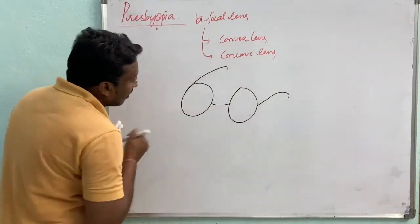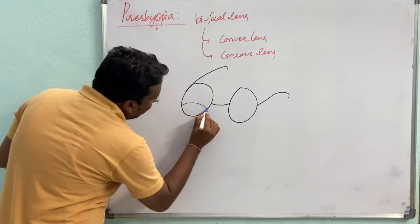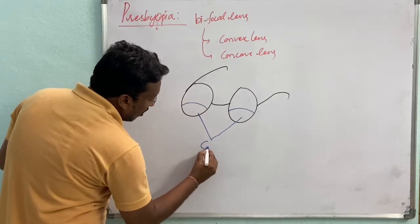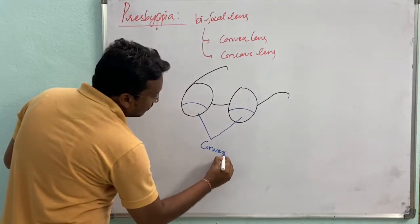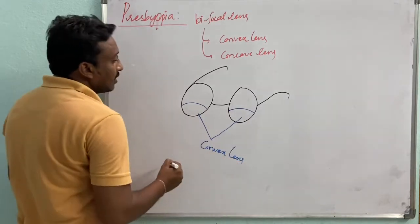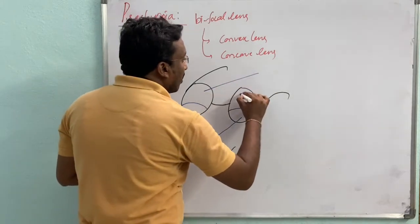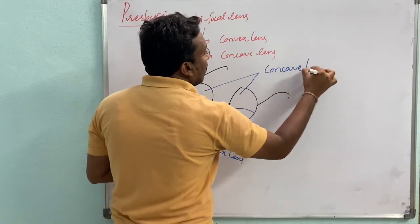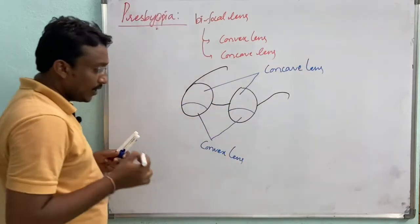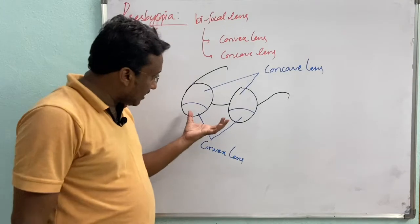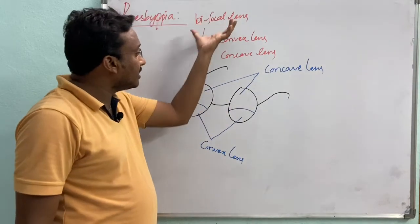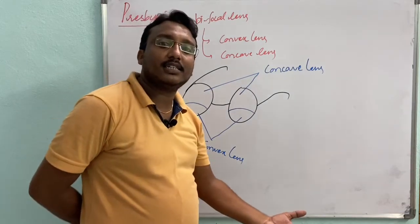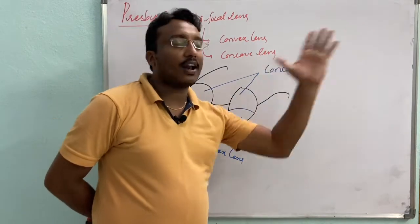The lower part of the bifocal lens consists of a convex lens, and the upper part consists of a concave lens. This bifocal lens is useful to see both closer objects and far objects.